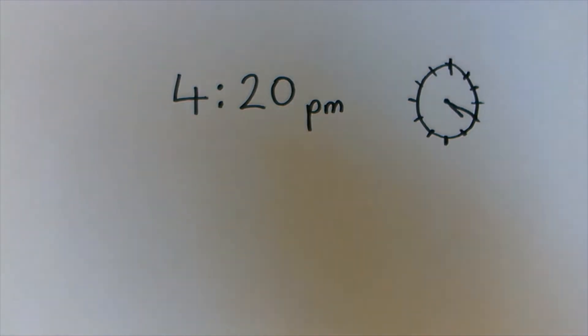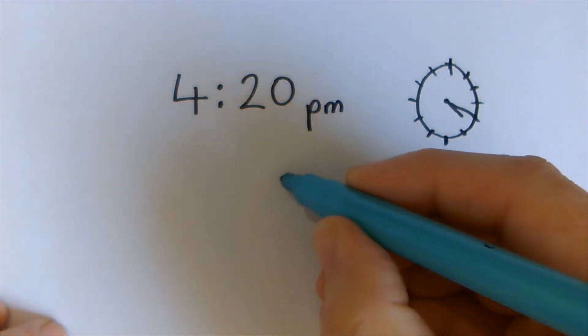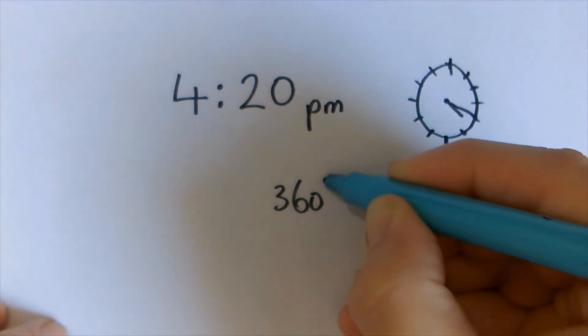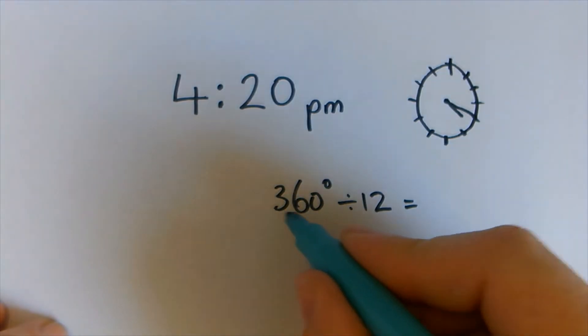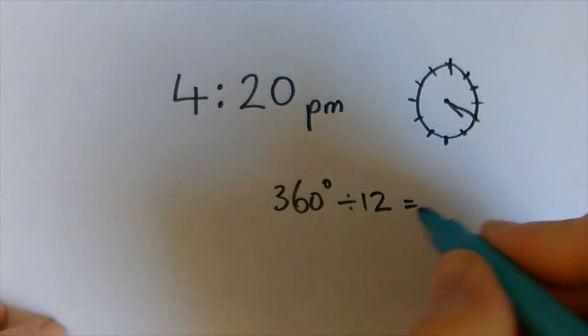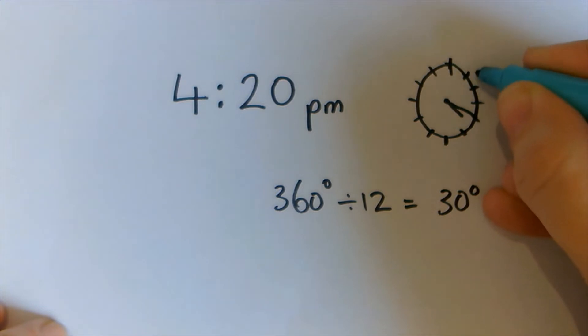So, did you get the answer of 10 degrees? I'll show you why. The whole circle is 360 degrees. And if we divide that by 12 hours, what's 360 divided by 12? That's 30 degrees.